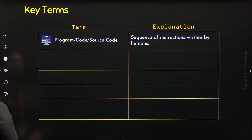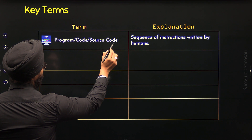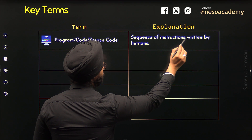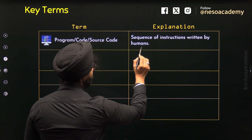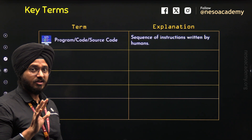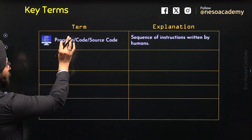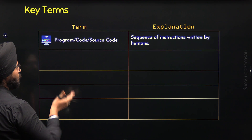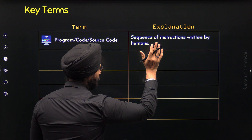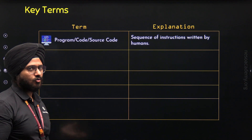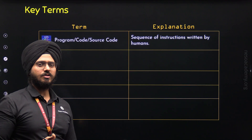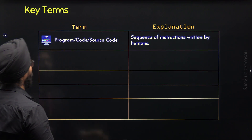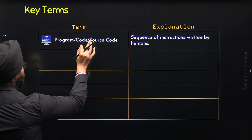The first key term is Program, Code, and Source Code. These are three terms which mean the same thing — a sequence of instructions written by humans. When we write a sequence of instructions, we call it a program, a code, or a source code. We can choose any of these names to refer to a sequence of instructions.